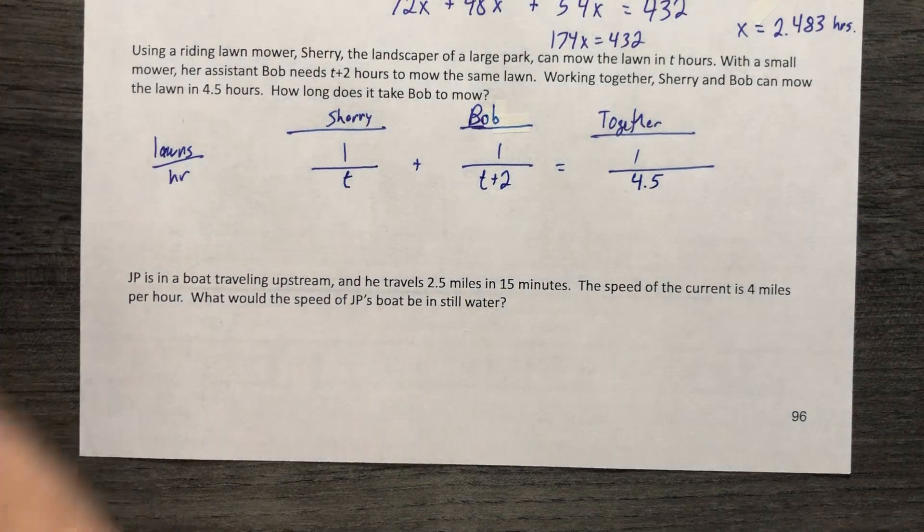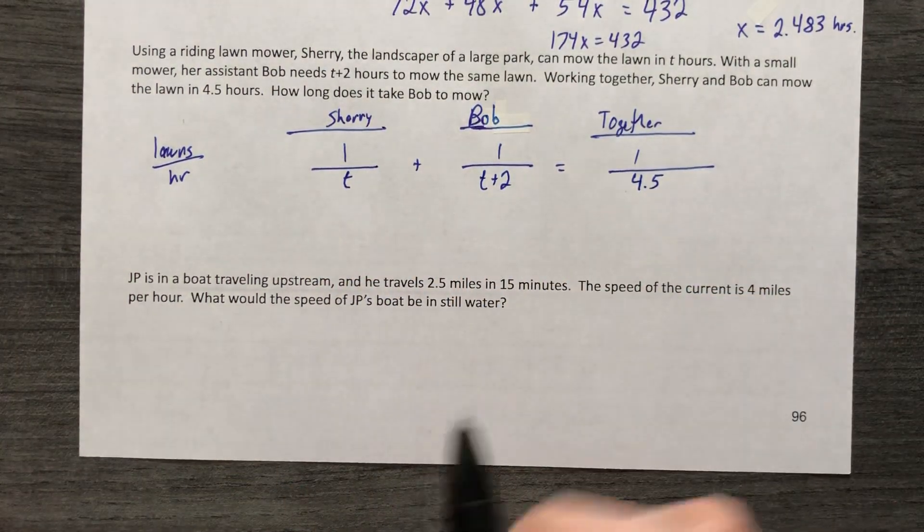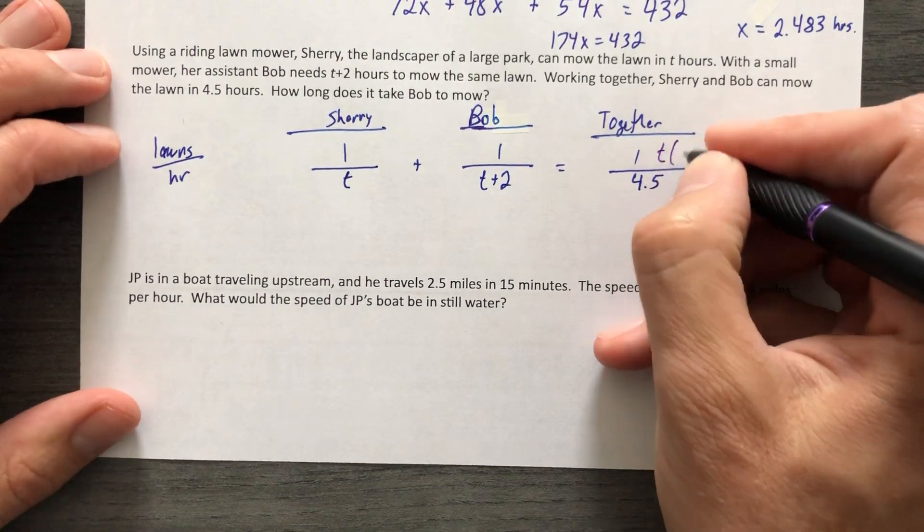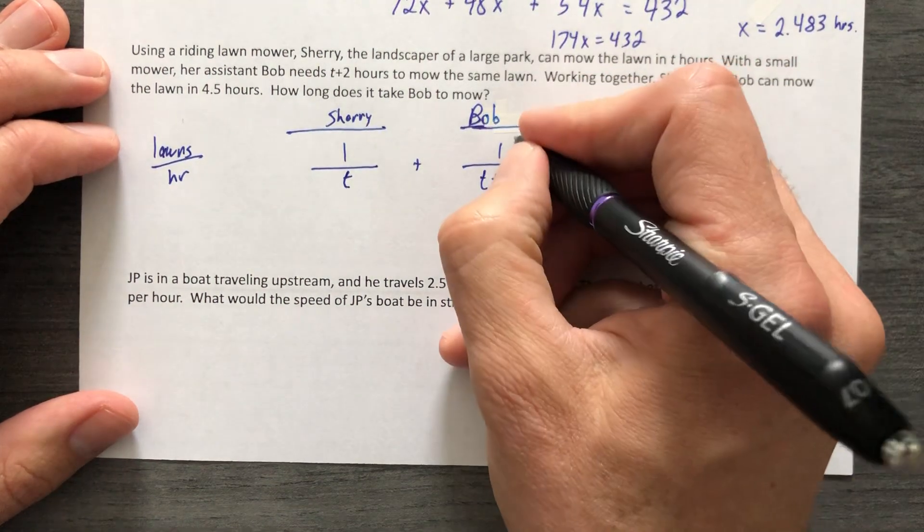Ooh, common denominator. I wonder what it is. Common denominator is going to be every denominator that you see. T, so it's going to be T, T plus two, and 4.5. And we're going to just put that on all of them.